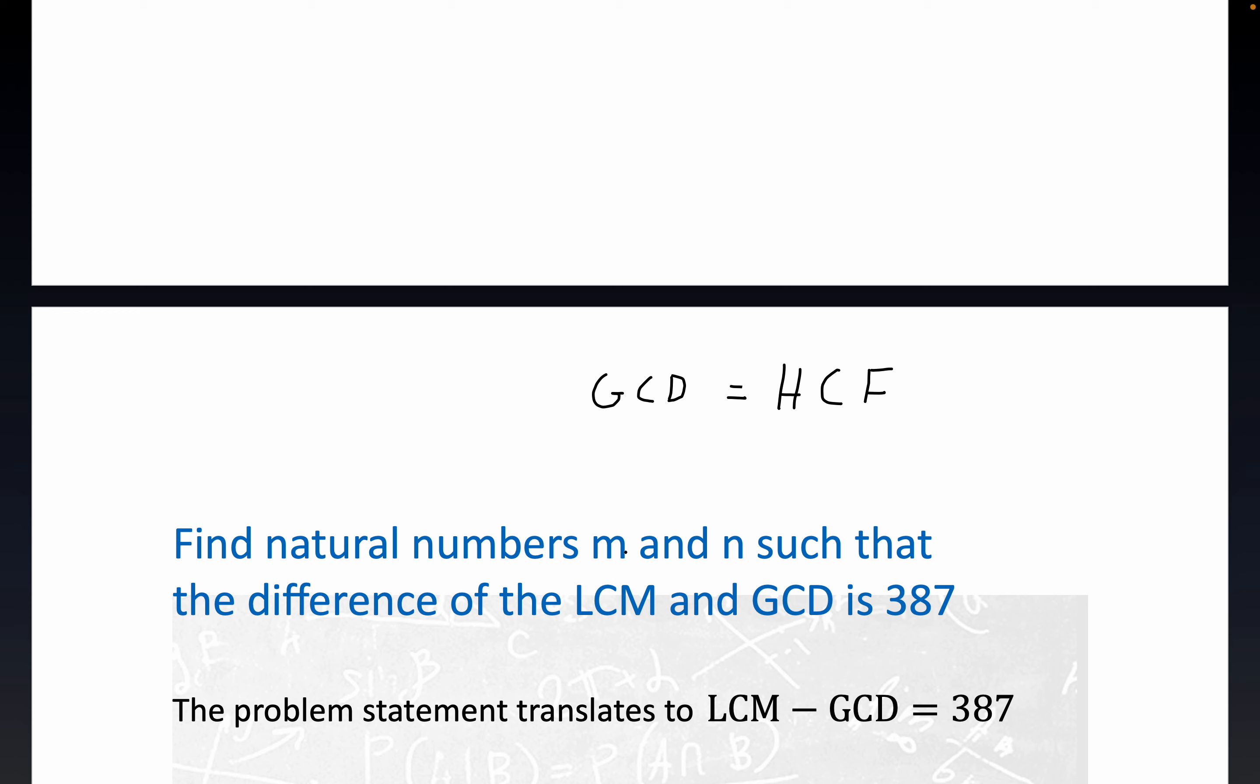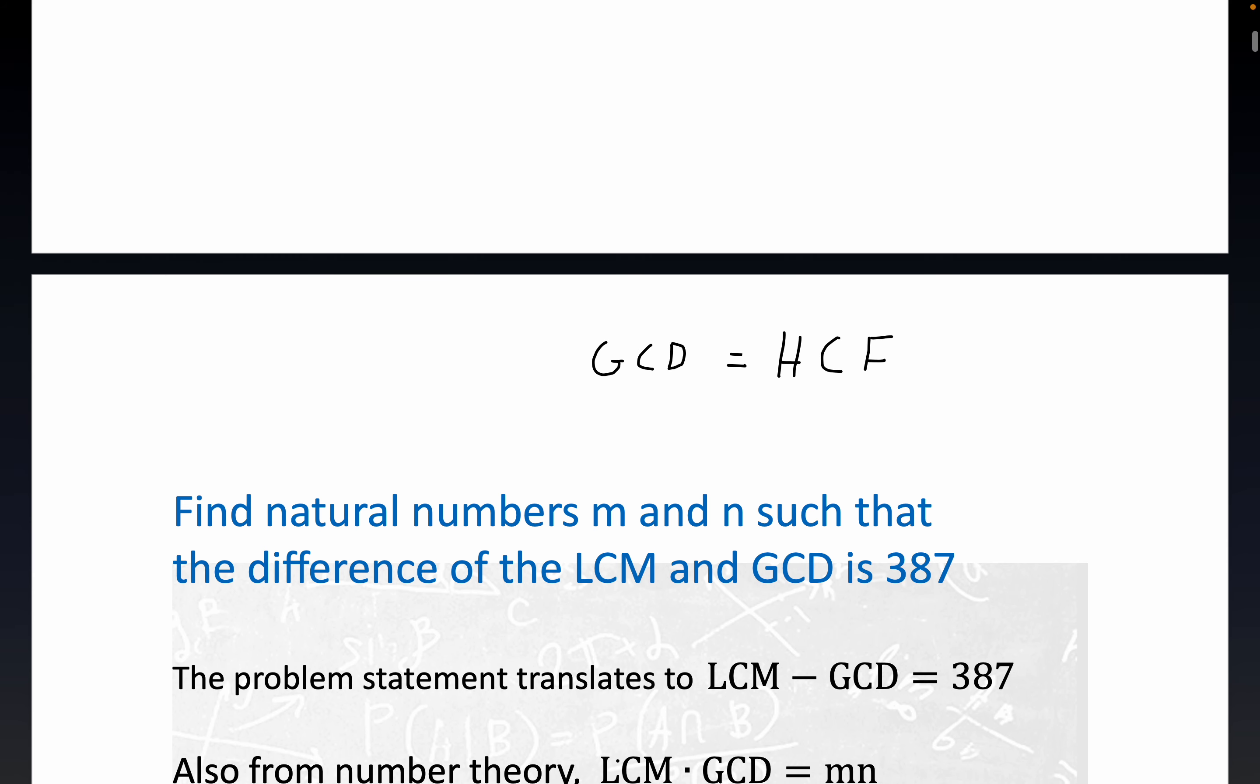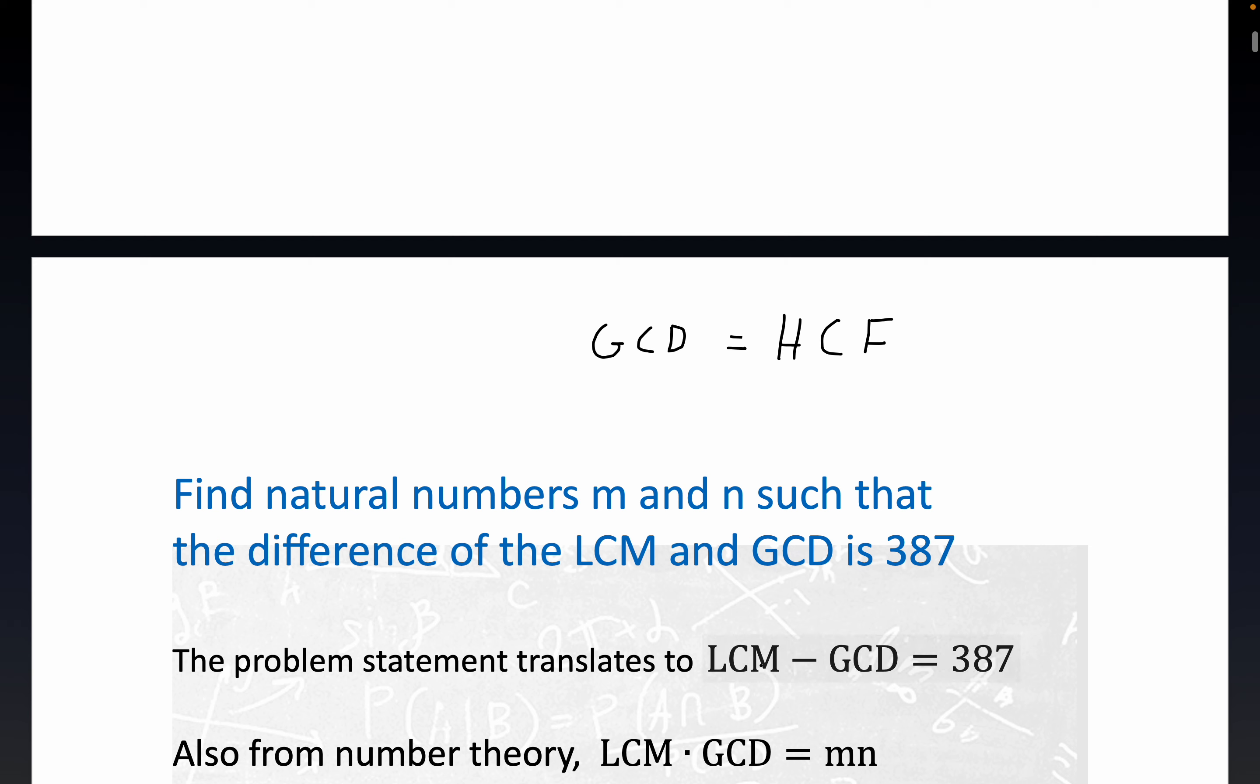We're trying to find two natural numbers, positive integers M and N, such that the difference between the LCM and the GCD is 387. Below here is just a direct translation of the problem: LCM minus the greatest common divisor or the highest common factor is equal to 387.